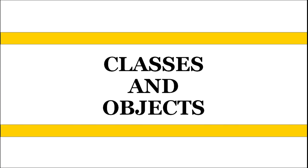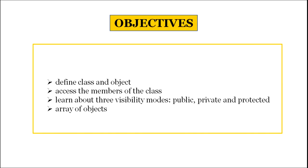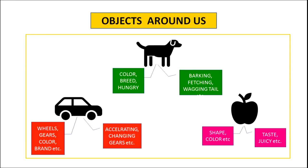Hello friends, I am Vinita Gar, HOD Computer Science. In this video lesson we will talk about classes and objects. You would be able to identify class and object, access the members of the class, learn about three visibility modes — public, private and protected — and array of objects. We are surrounded by different kinds of objects.